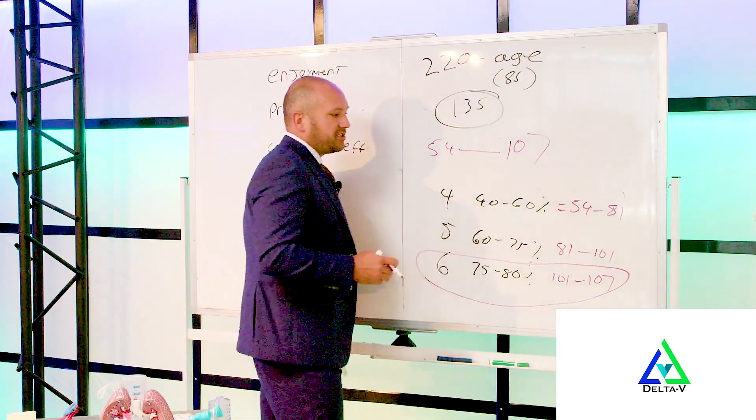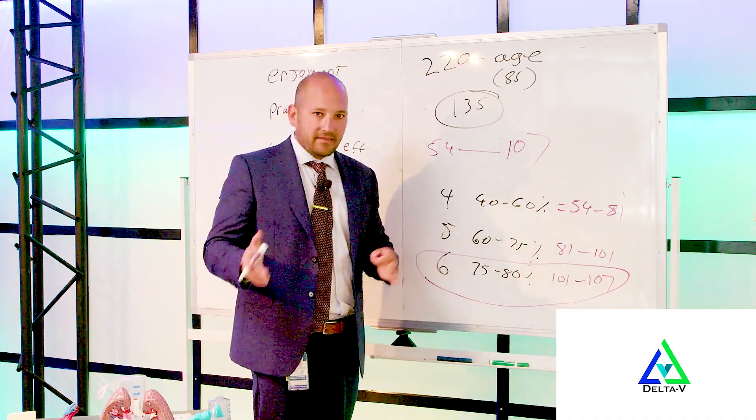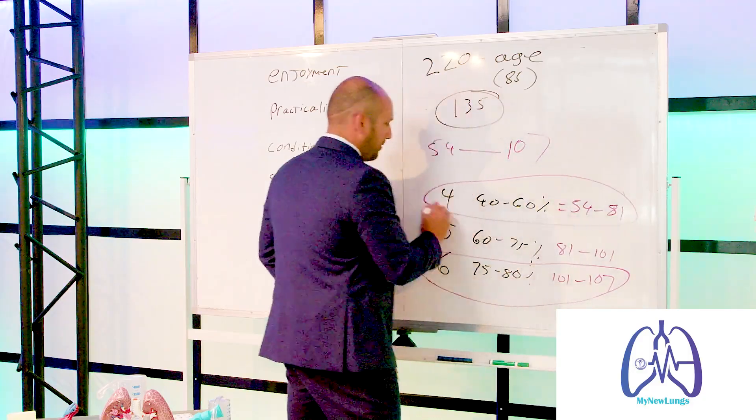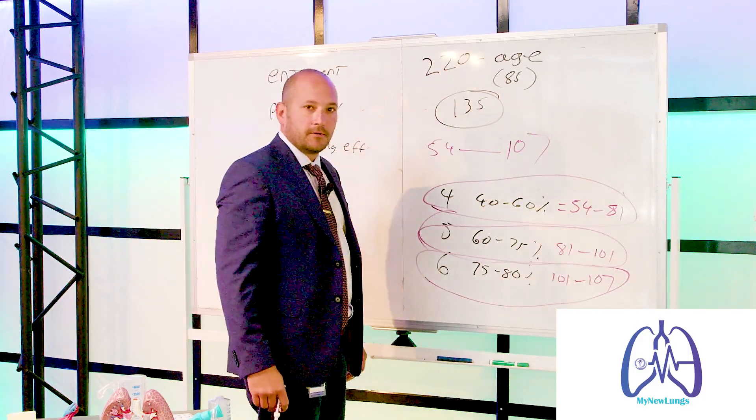If somebody wants to just increase their lifespan without having to become an athlete, they would work out in a zone 4 on a Borg scale, maybe a 5 on a Borg scale at times.